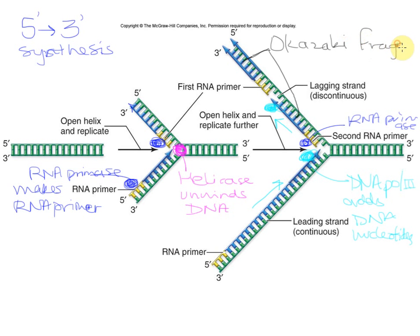Once the Okazaki fragments are made, they need to be linked together — but first, the RNA primer must be removed. Even though the RNA primer enables DNA polymerase III to add DNA nucleotides, RNA is very unstable and must be removed. DNA polymerase I comes in, removes the RNA primer, and replaces it with DNA nucleotides.